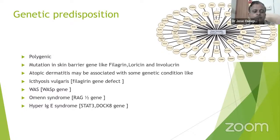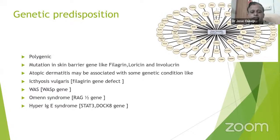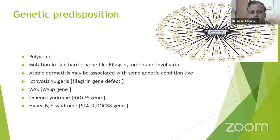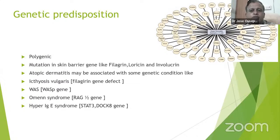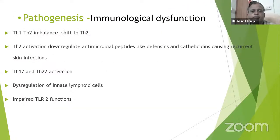There will also be Wiskott-Aldrich syndrome (WASP gene), Omenn syndrome (RAG gene), and Hyper-IgE syndrome (STAT3 or DOCK8 gene mutations) associated with Atopic Dermatitis. Multiple gene defects have been put forth in the pathogenesis of Atopic Dermatitis.